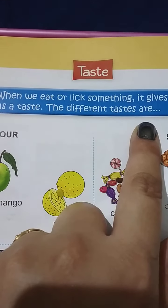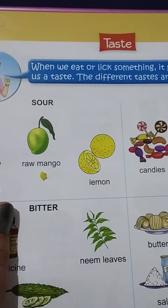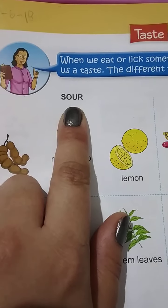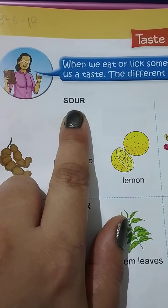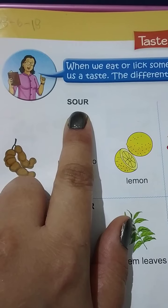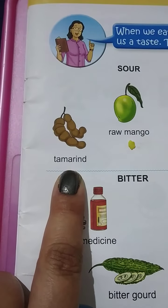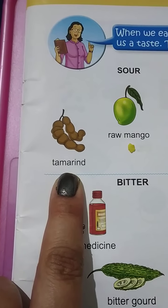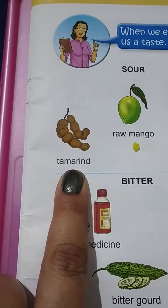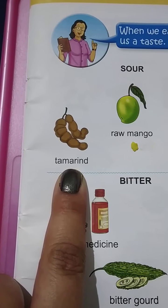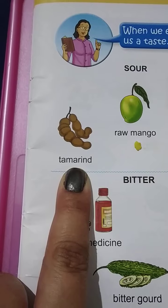The different tastes are — now we will see what are the different types of taste. Sour. Sour means katta. What is this? Tamarind. Tamarind means Imli. Imli ka taste kaisa hota hai? Katta hota hai na? How does it taste? Katta hai na?